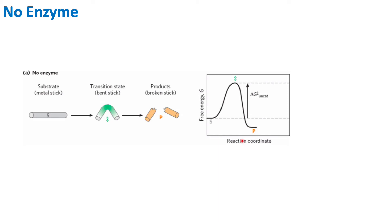Enzymes are utilized in many biological processes to speed up a reaction by reducing the activation energy of a process. Remember that there are spontaneous and non-spontaneous reactions. It's important to understand that just because a reaction is spontaneous, that does not mean it's going to occur 100%. We still need to reach our activation energy in order for a spontaneous reaction to occur. Spontaneous simply refers to the reaction being more likely to happen compared to a non-spontaneous reaction, which is most likely endothermic.